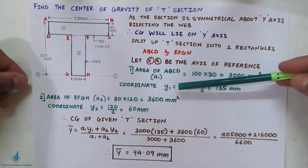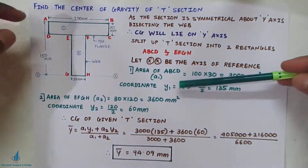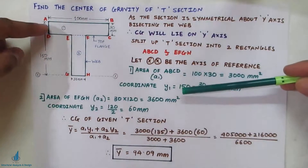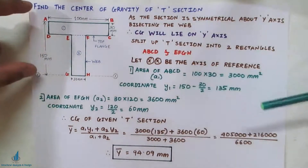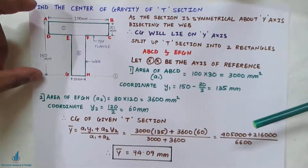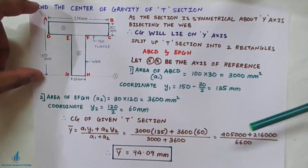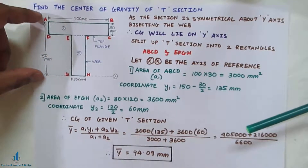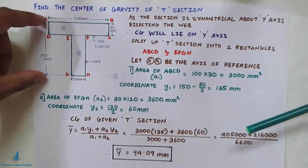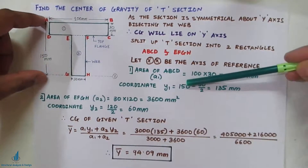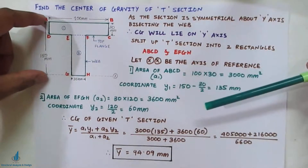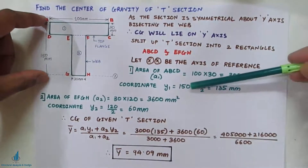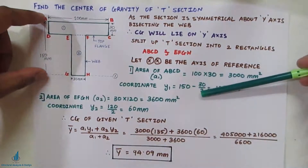We are finding out the coordinate of rectangle ABCD, going from the bottom-most line of this figure. So the entire 150, minus 30 divided by 2.